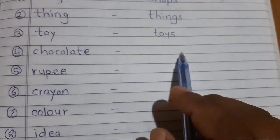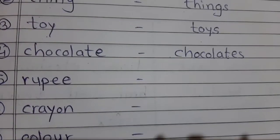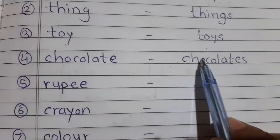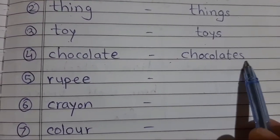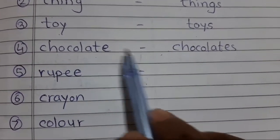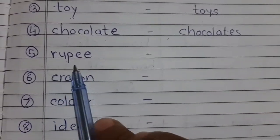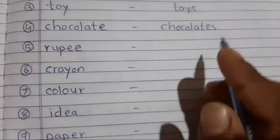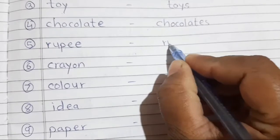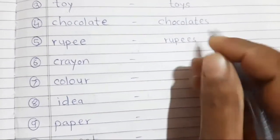C-H-O-C-O-L-A-T-E-S, chocolates. Chocolate, chocolates. Rupee, rupees. R-U-P-E-E-S, rupees.